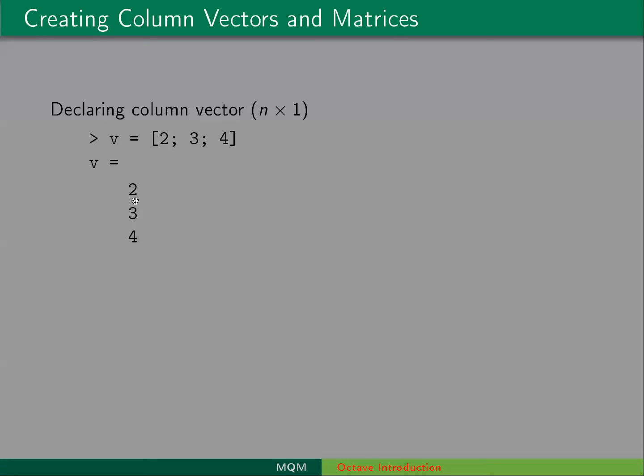So this is how you can explicitly declare a column vector in Octave. And then a matrix, you'd write elements separated by spaces for each row, and then each row is separated by a semicolon.